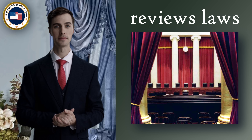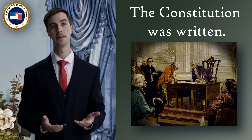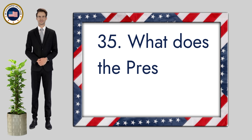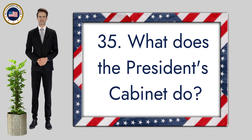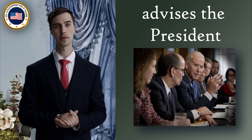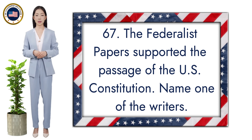When was the Declaration of Independence adopted? July 4th, 1776. What does the judicial branch do? Reviews laws. What happened at the Constitutional Convention? The Constitution was written.